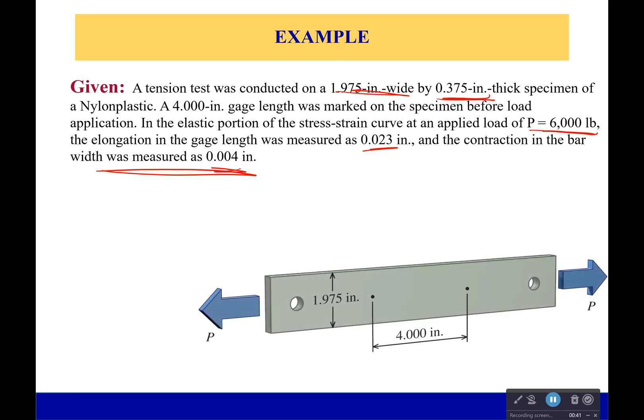So here is our gauge length right there, there is the height of it or width of it, it's 0.375 inches thick. We applied a force, it got longer and it got thinner. And we want to know the elastic modulus E, Poisson's ratio, as well as the shear modulus G.